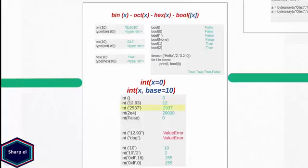If you pass any valid integer string, int returns the integer value. Similarly you can pass a number in scientific notation or a boolean value. If you pass a string which is not a valid integer value, int returns a ValueError exception.